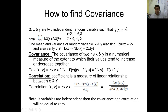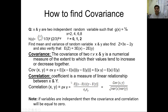If two random variables are independent, then their covariance and correlation will always be equal to 0. If two variables have covariance and correlation not equal to 0, then they will be treated as dependent variables, and in that case you will calculate covariance and correlation. In this lecture, I am going to show you how to calculate covariance and correlation using Excel and how to calculate it manually.